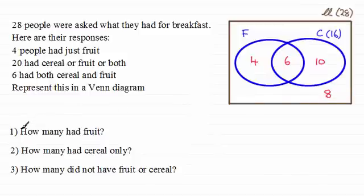So now I'm in a position then to answer these three questions here. How many had fruit? Well, that's going to be the total of the four and the six. So we'll put that in there now that we know it as being 10. So we've got 10 then. How many had cereal only? Well, that's the 10 here. So we've got another 10 there. And for three, how many did not have fruit or cereal? Well, that's got to be the eight out here. So hopefully you can see now how helpful Venn diagrams are in sorting out information like this.